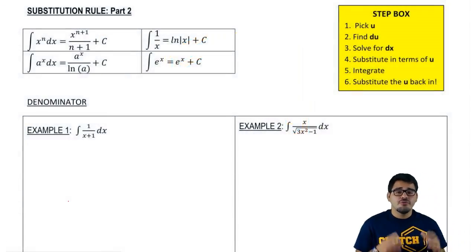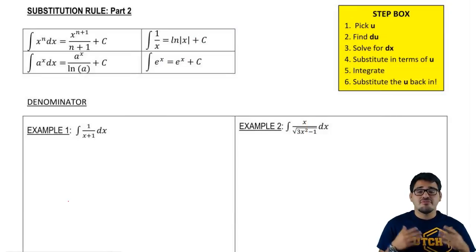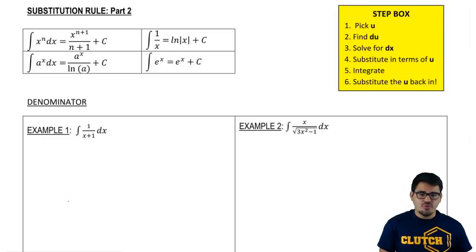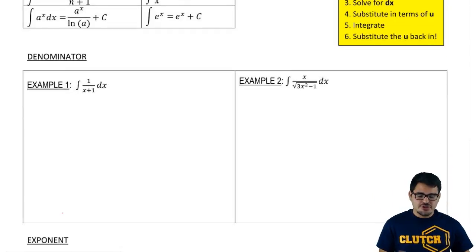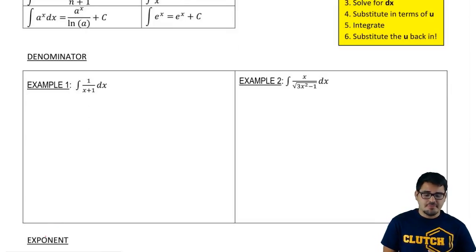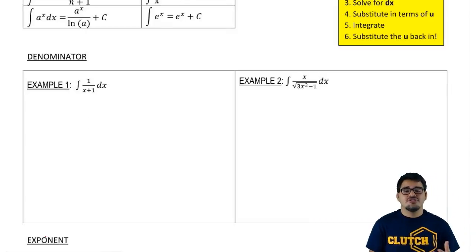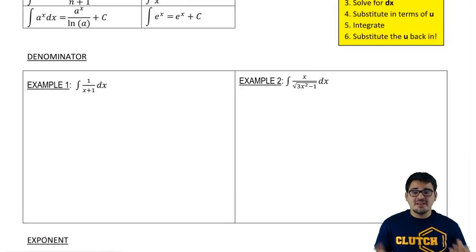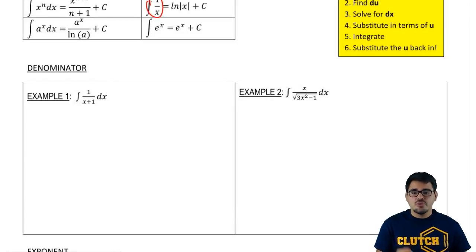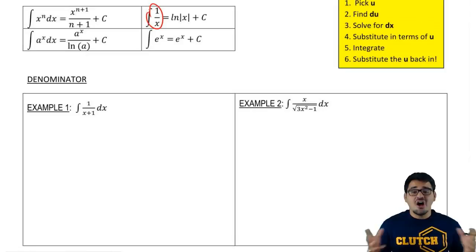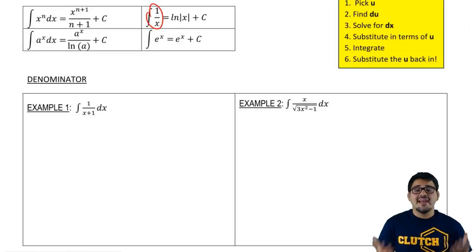We start off with a bunch of rules that are going to be very handy when computing these types of problems. Let's jump straight into example one and discuss when u is the denominator of a function. Here we have 1 over x plus 1. We can't integrate this because the only thing we know how to integrate is 1 over x. Anything other than that, like 1 over x plus 1, we can't integrate.